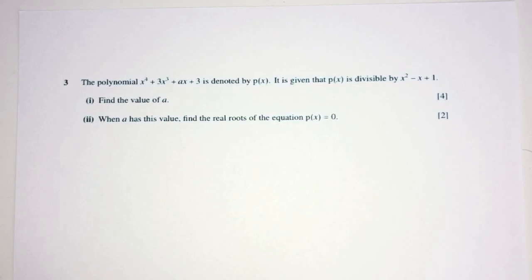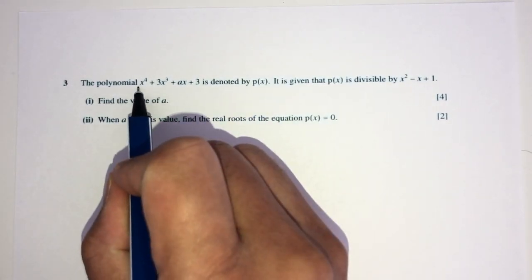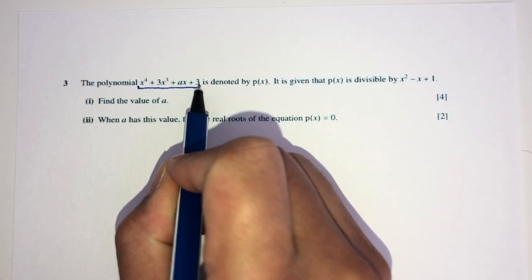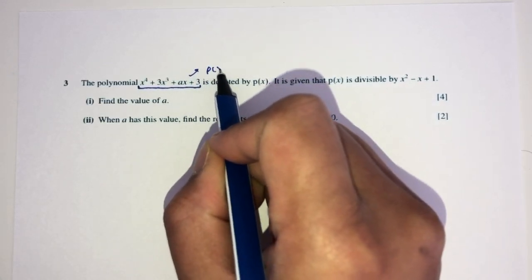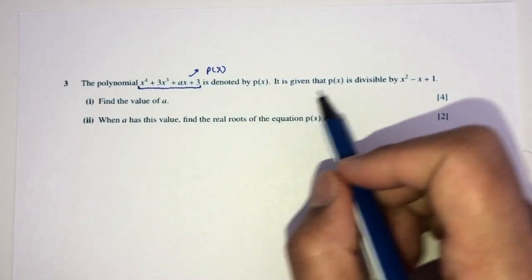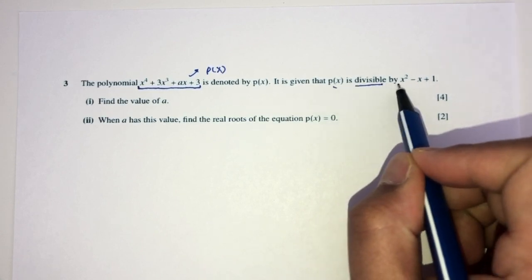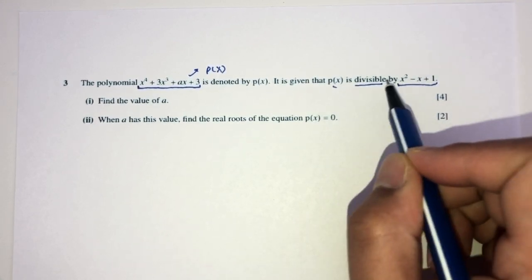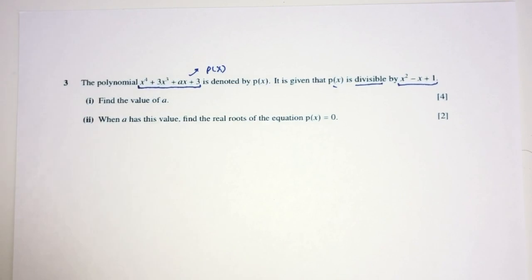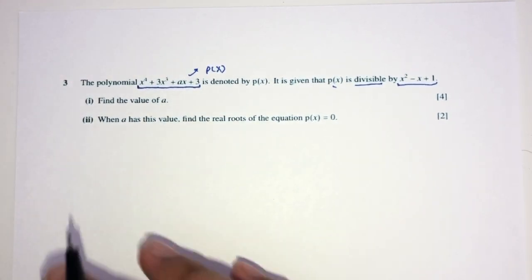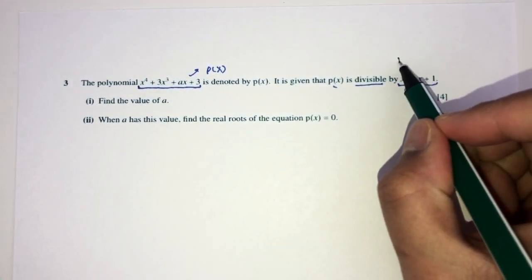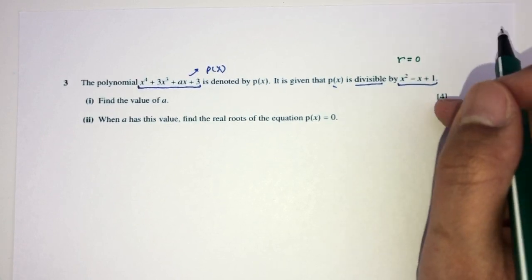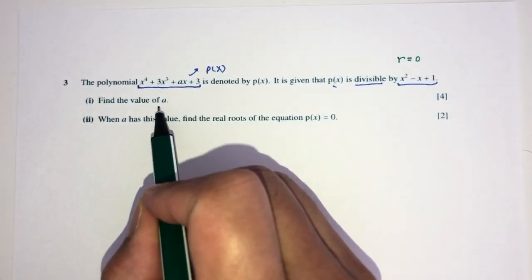Now, let's move on to question number 3. So, here we have a polynomial. This one is this equation. And we are calling this equation p of x. Alright, good. It is given that p of x is divisible by this one, which means this is a factor of p of x. Now, what does it mean if something is a factor of something? The remainder will be 0 when we divide by this. Now, using that information, find the value of a.